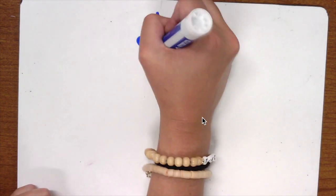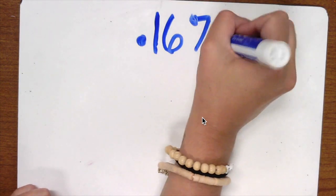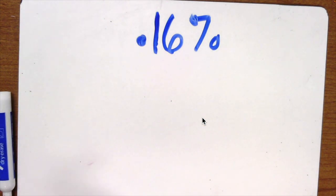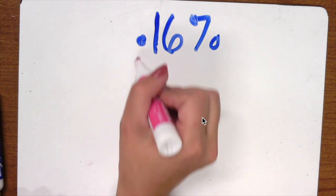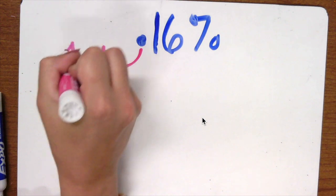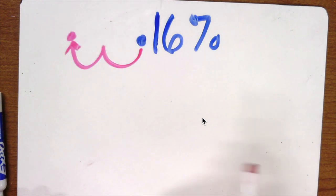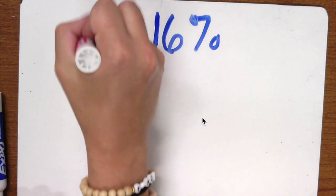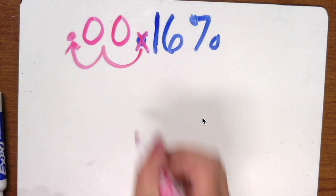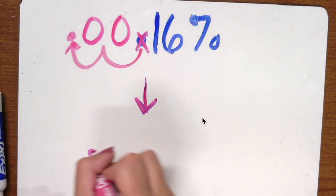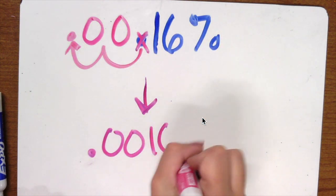What if I have 0.16 percent? Well in that case, I start at my decimal because I already have one. I jump one, two spaces to the left. I don't have numbers there so I need to add zeros and take away my old decimal. So my new decimal will be 0.0016.